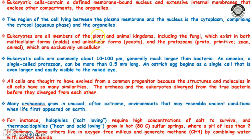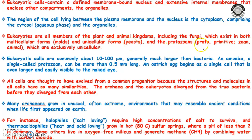All members of the plant and animal kingdom belong to eukaryotes. We also have fungi, which can exist in multicellular form — which are molds — or in unicellular form — which are yeasts. And protozoa, which are primitive animals and are exclusively unicellular, also belong to eukaryotes.